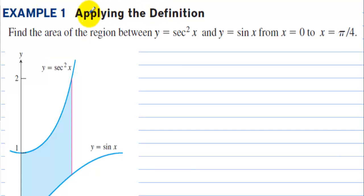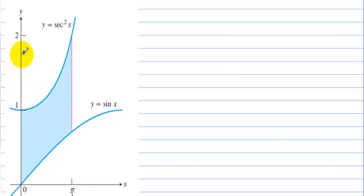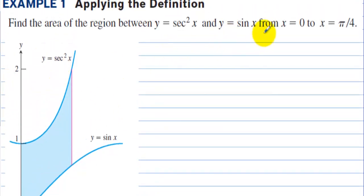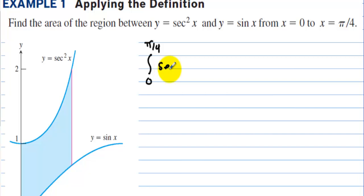Applying the definition: find the area of the region between y = sec²x and y = sin(x) from 0 to π/4. Secant squared is always above sine of x from 0 to π/4, so we integrate from 0 to π/4 of sec²x minus sin(x) dx.